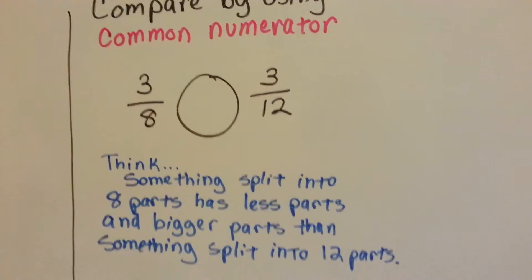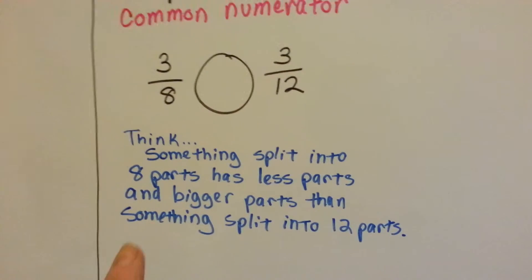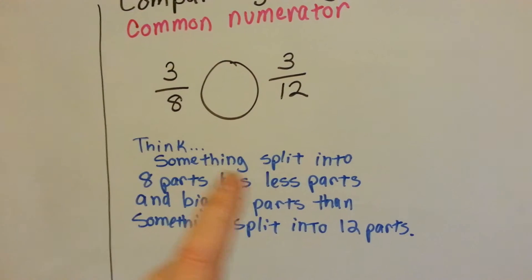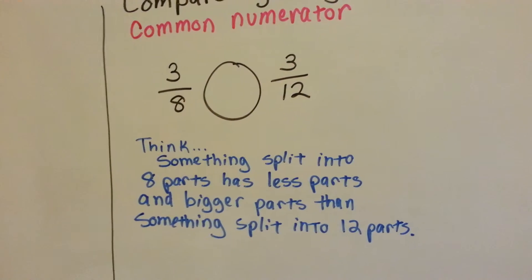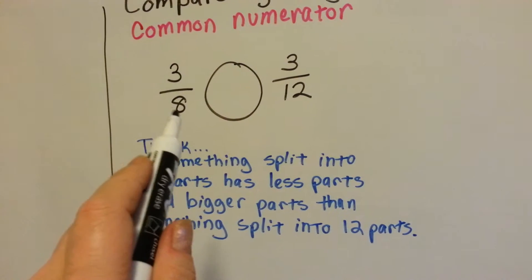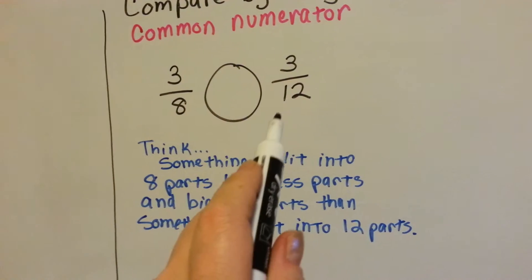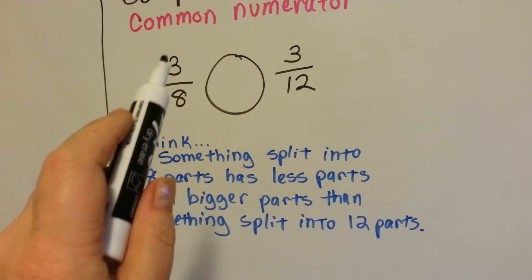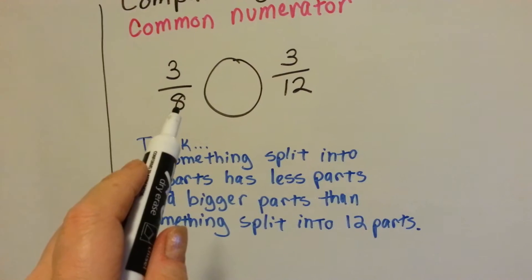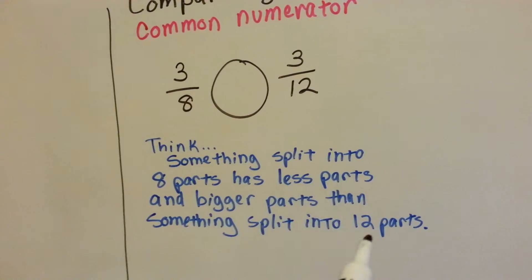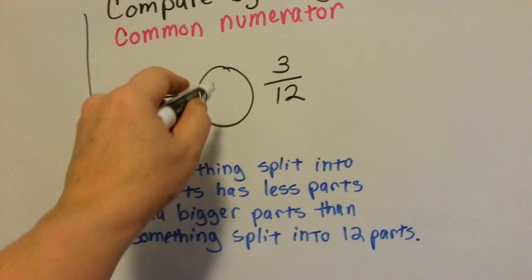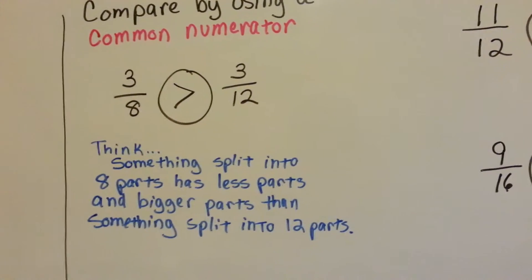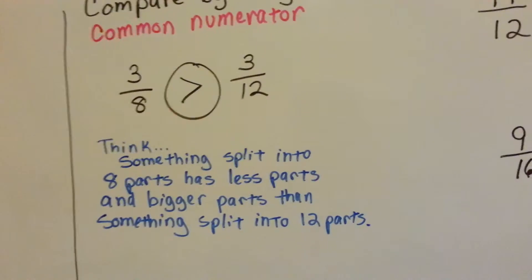We have 3 eighths and 3 twelfths. So this is what we think. Something split into 8 parts has less parts and bigger parts than something split into 12 parts. If you had a candy bar and split it into 8 parts, these pieces would be bigger than if you had the same candy bar split into 12 parts. They'd be littler pieces. If you had 3 pieces that were bigger, you'd have a lot more than 3 pieces that were cut smaller. So 3 eighths is bigger. That's how we use a common numerator to find out the answer.